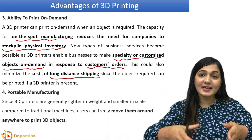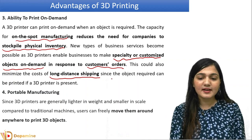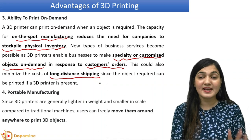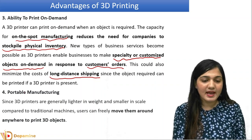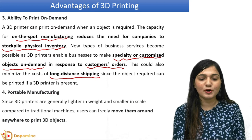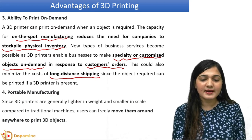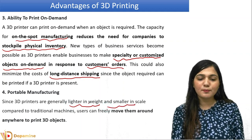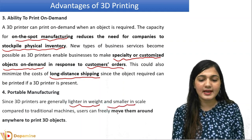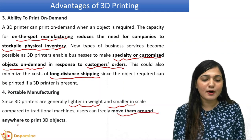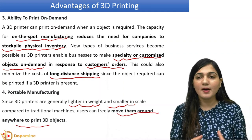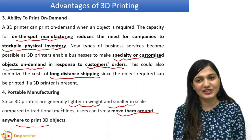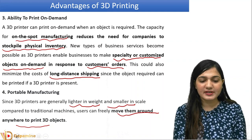Now we can have portable manufacturing because we can have the factory in a single room. In a single room, we can operate our 3D printer and run our whole factory. The 3D printer is light in weight and smaller in scale, so we can keep it in a single room and even move it around anywhere to print 3D objects.